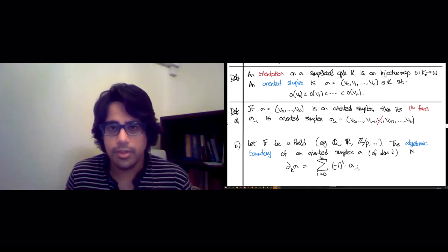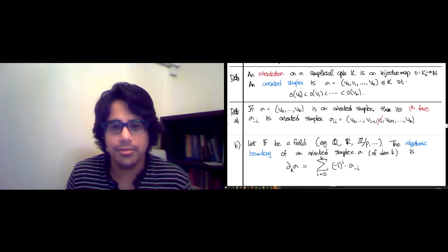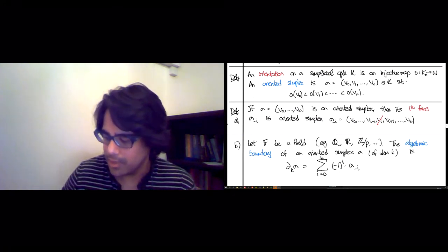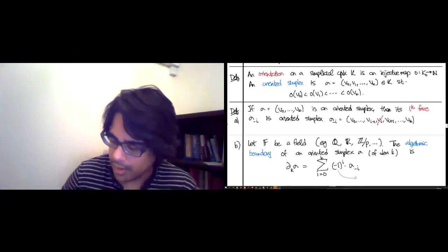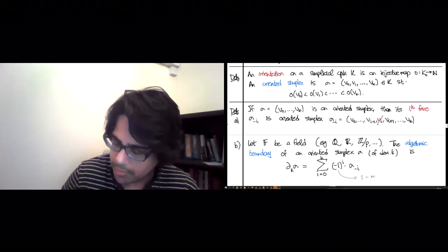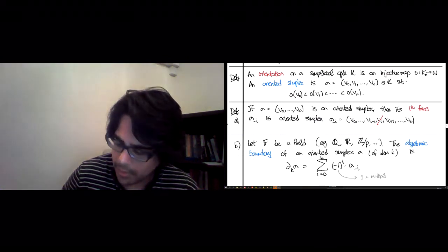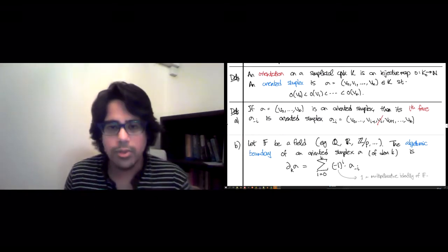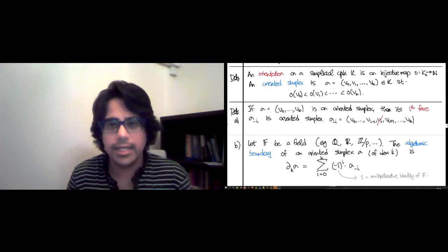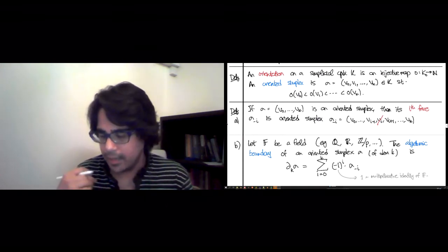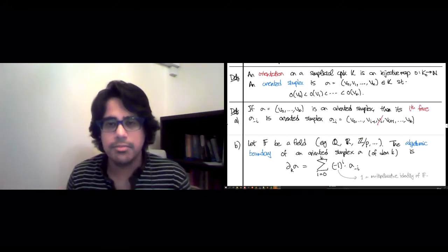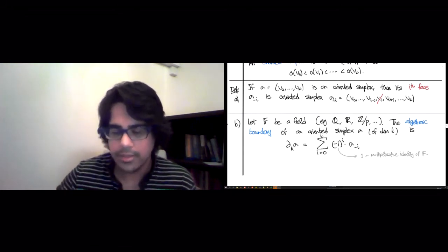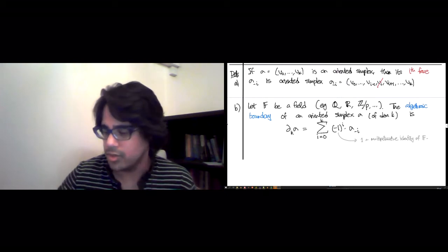Okay. If you've never seen this before, this might seem like an absolutely bizarre construction. So the first thing to figure out is what this minus 1 means. So this 1 is the multiplicative identity of F. So what we've done is that we've taken a k-dimensional simplex and spit out a plus minus 1 combination of all of its faces of dimension 1 less.